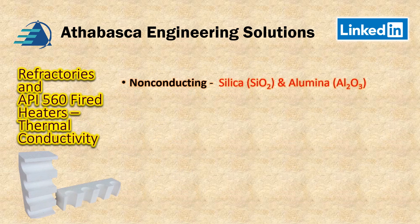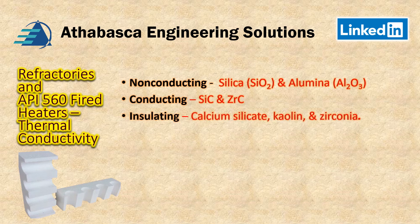There are three types of thermal conductivity classifications for refractories: non-conducting, which includes silica and alumina; conducting, which includes silicon carbide and zirconium carbide; and the insulating class, which includes calcium silicate, kaolin, and zirconium.